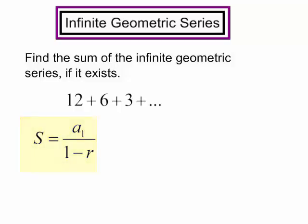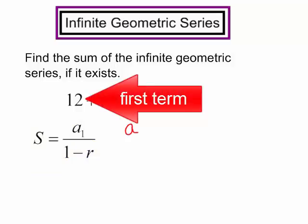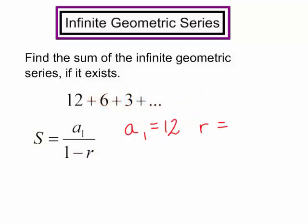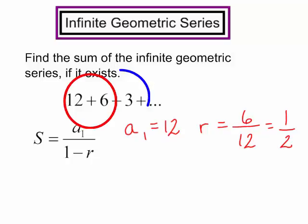I need to know the first term. It is 12. I also need to know the common ratio. Remember I could take the second term divided by the first. The common ratio is 1 half. Once again, I can take any term and divide it by the preceding term and get the common ratio.